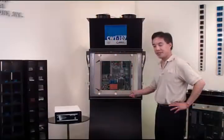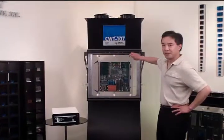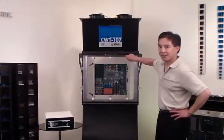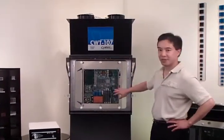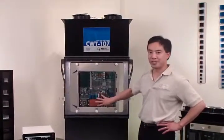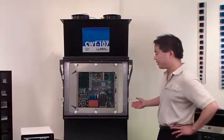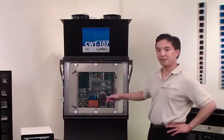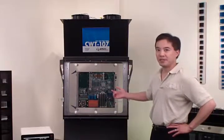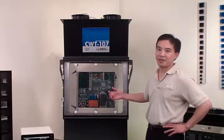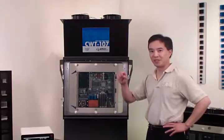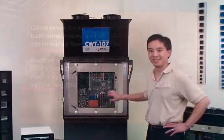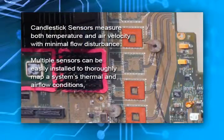Our test section features many ports here that screw in and out, and this allows you to put all kinds of sensors in here, whether that's thermocouples or wires for heaters that you might put on your PCB. You can also insert a pitot tube to measure velocity, or you can measure air velocity with a hotwire anemometer, such as our candlestick sensors, which are extremely low-profile and will go anywhere on your PCB, allowing you to measure velocity at different points.